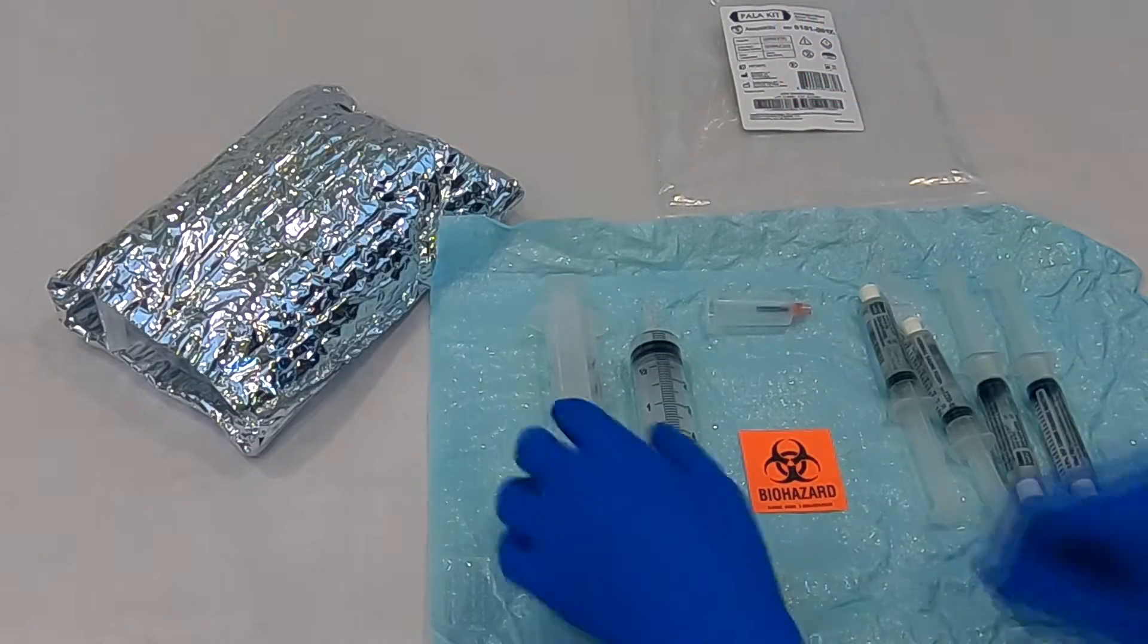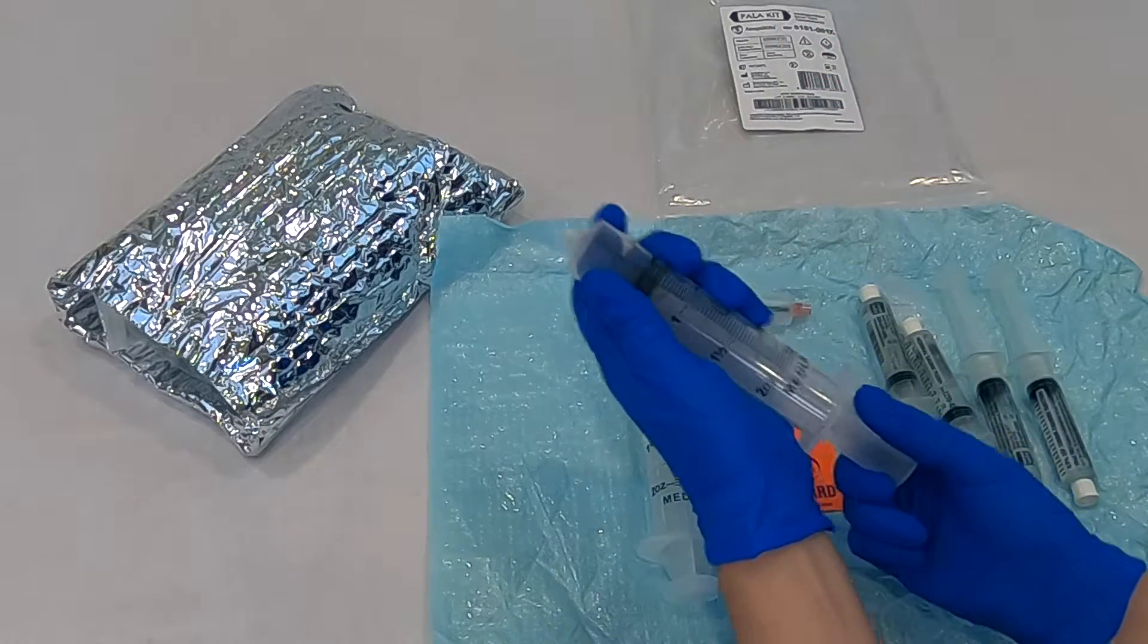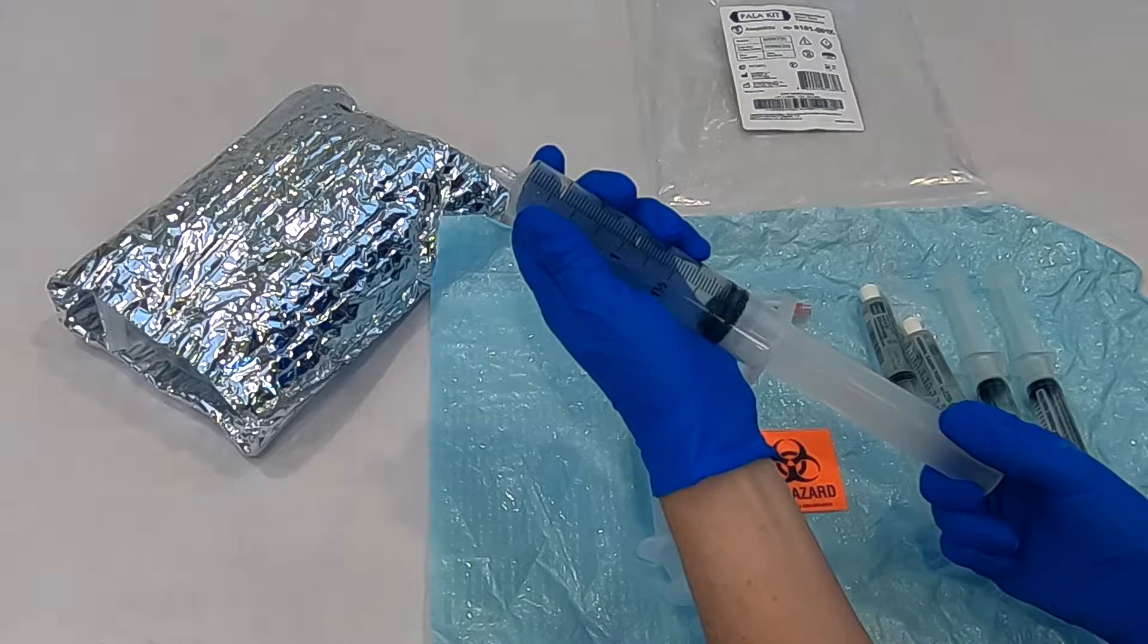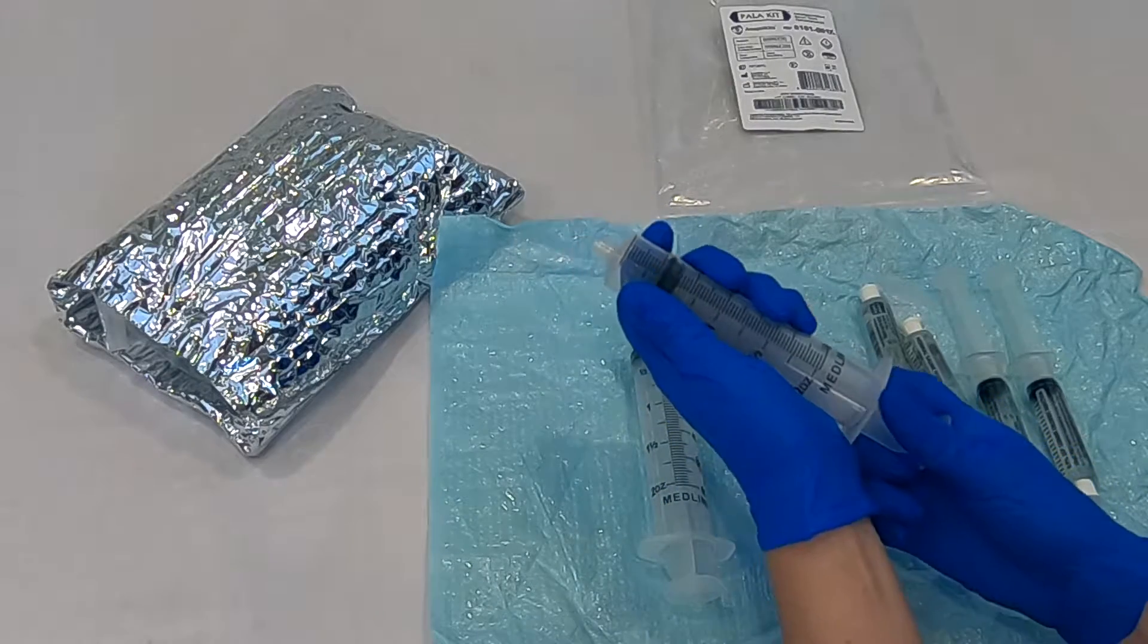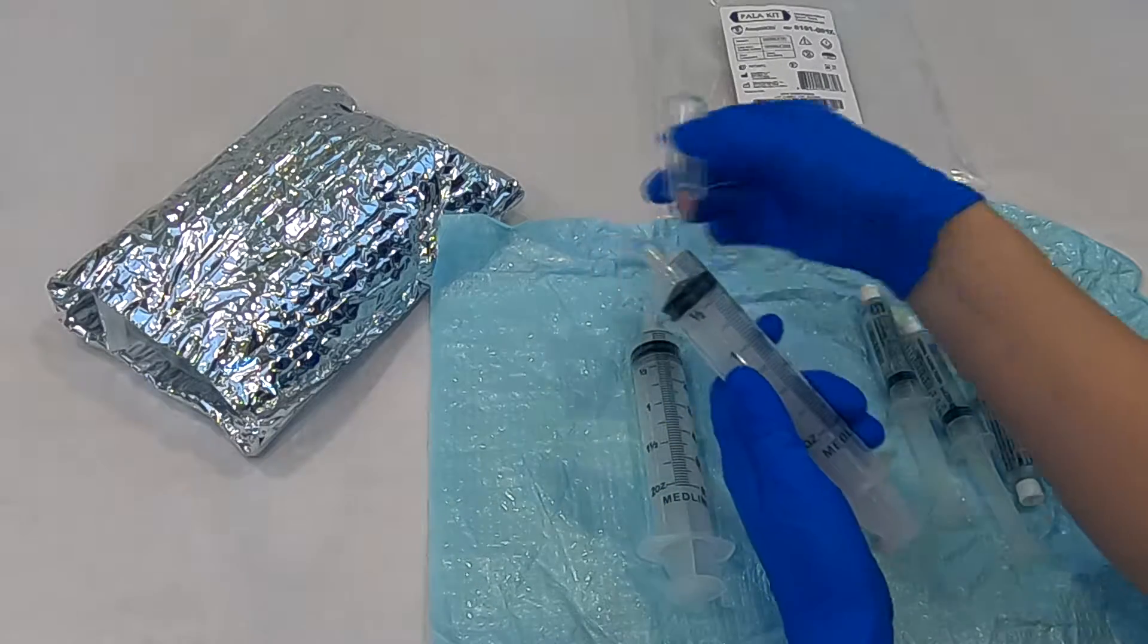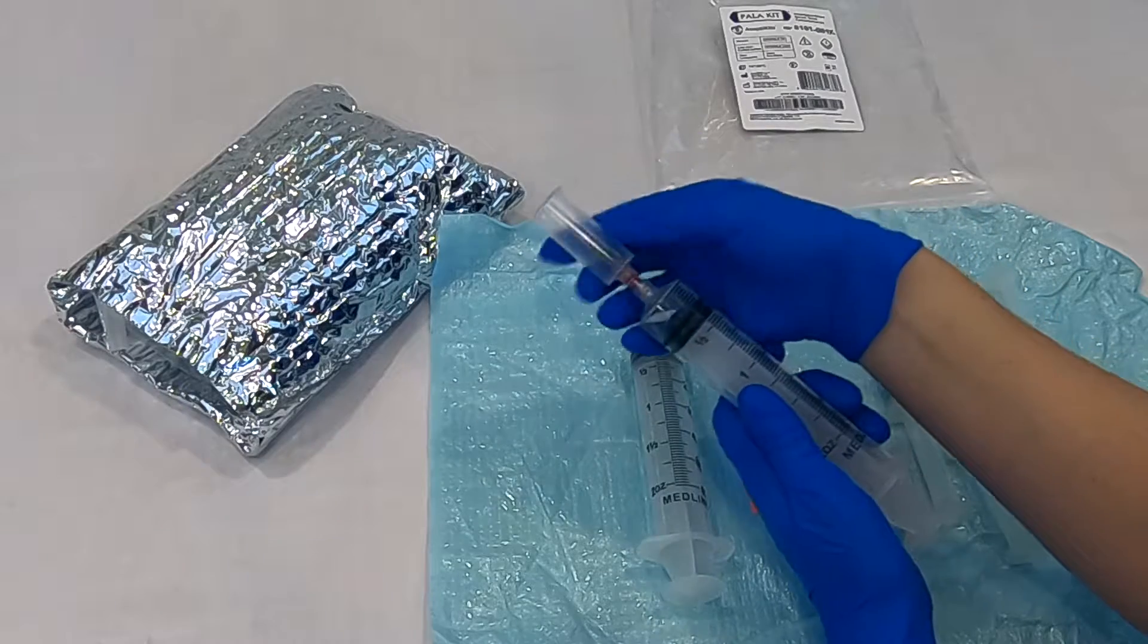For this first step, access the 60 milliliter syringe without the female-to-female luer adapter. Break stiction for ease of use. Connect the phlebotomy fluid transfer barrel to the conventional syringe.